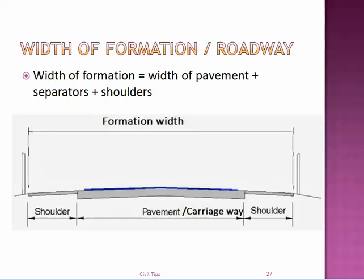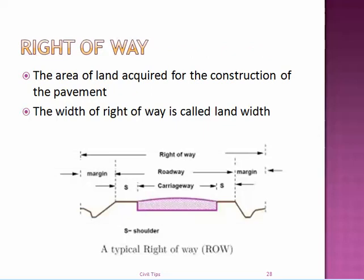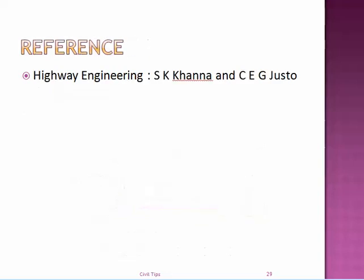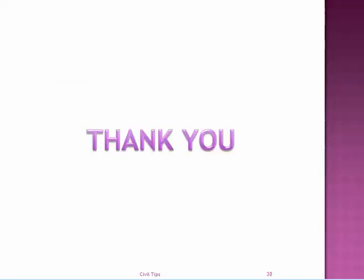The next highway cross-section element is the width of formation, or width of roadway. It is equal to the width of pavement plus traffic separators or medians plus the shoulders. The last highway cross-section element is the right of way — the area of land acquired for construction of the pavement, including future development. The width of this area of land is called land width, and it can be as high as 60 meters for national highways. This presentation is referenced from the Highway Engineering textbook by Khanna and Justo.